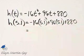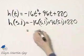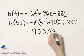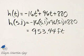And if you simplify the polynomial on the right, you'll find 953 and 44 hundredths feet. So after 5 and 1 tenths seconds, the height of the pebble will be 953 and 44 hundredths feet.